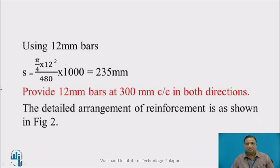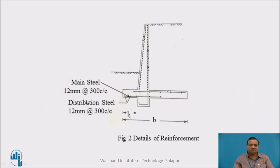At the bottom, using 12 mm bars, the spacing of the bars is given by area of 1 bar divided by area of steel, which is 230 mm. Provide 12 mm bars at 200 mm center to center in both directions. The detailed arrangement of the reinforcement is as shown in figure 2: main steel 12 mm diameter at 200 center to center, distribution steel 12 mm diameter at 200 center to center.